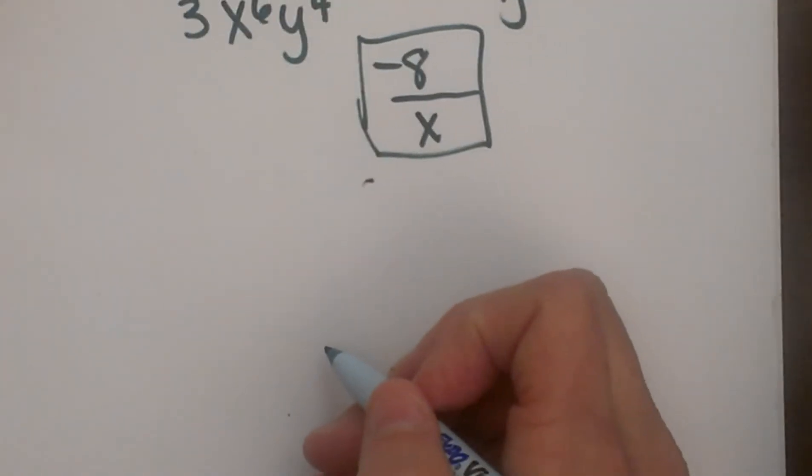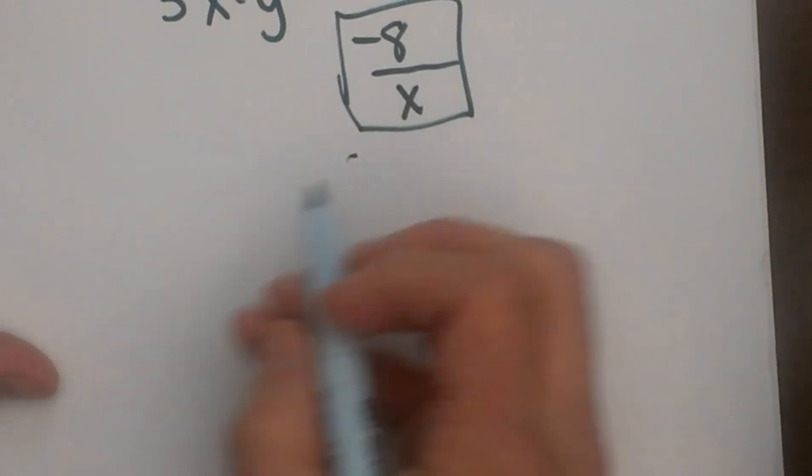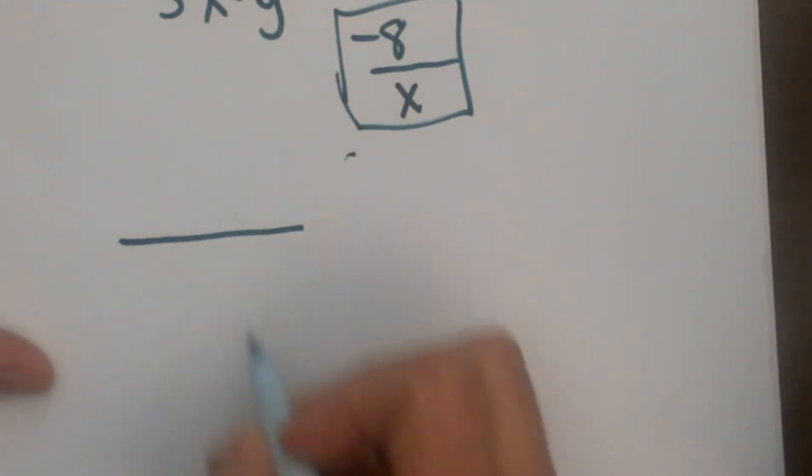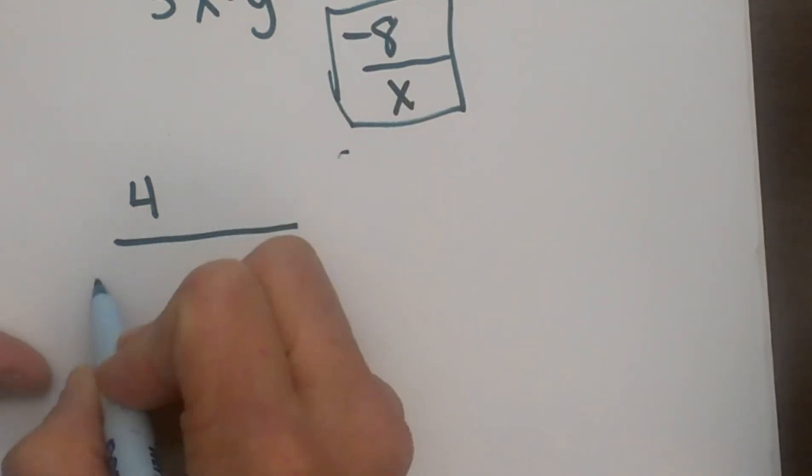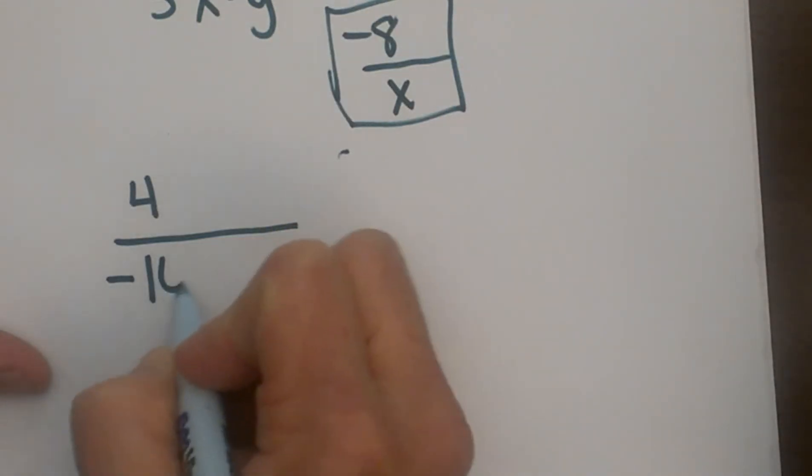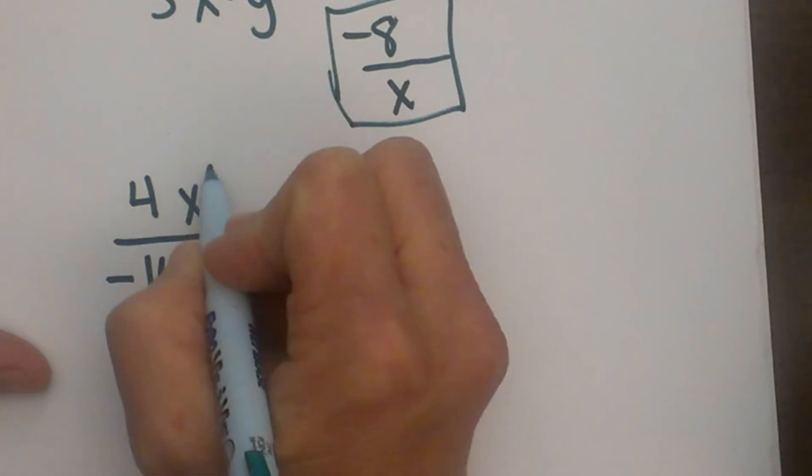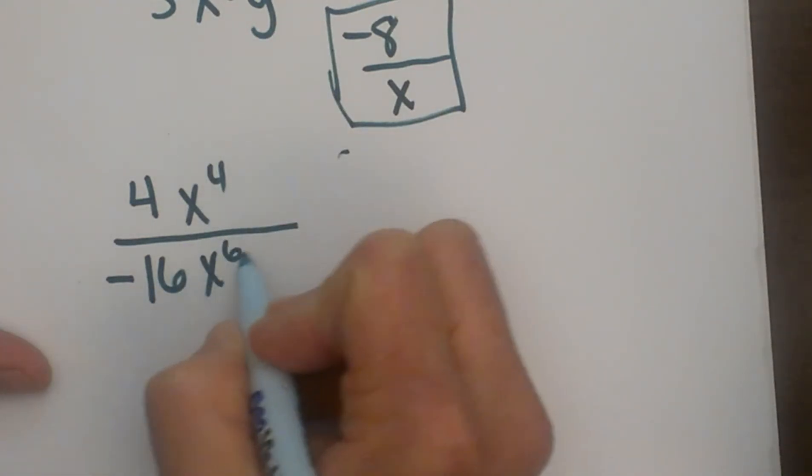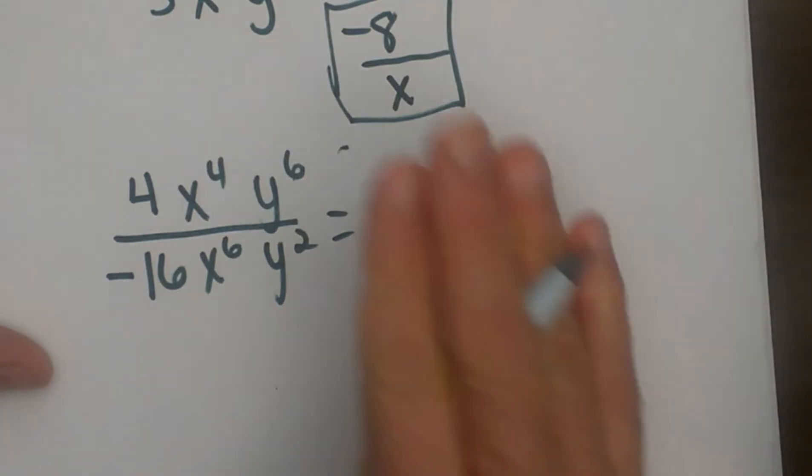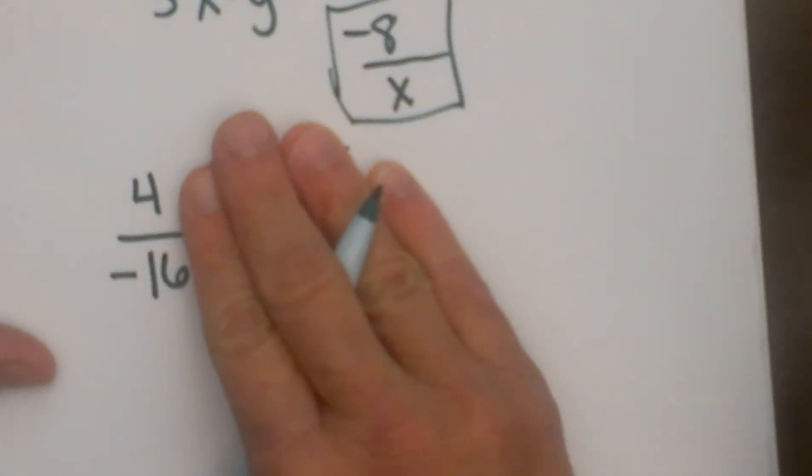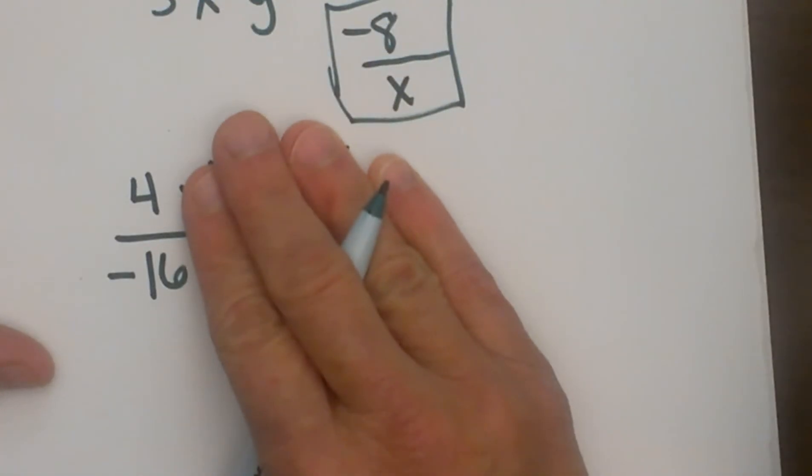Now I am going to give you one more, and this time this one is going to actually have a little bit more involved with the coefficients. So let's say you have a 4 up here and a negative 16 in the bottom, x to the fourth, x to the sixth, y to the sixth, y squared. Let's see how this one simplifies. I am going to look at my coefficients and I get 4 over negative 16.